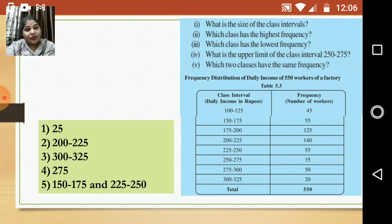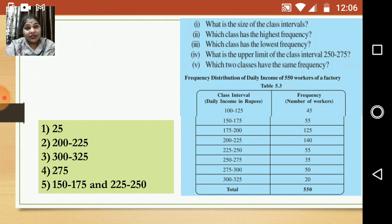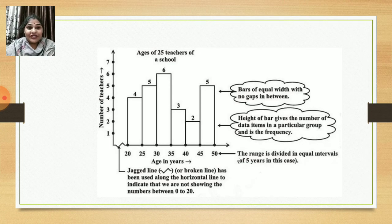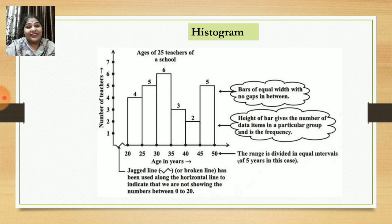So now you know what is upper limit, what is lower limit, what is the size or width of the class, and what is frequency. Let us proceed. This is a histogram — let's look at an example.